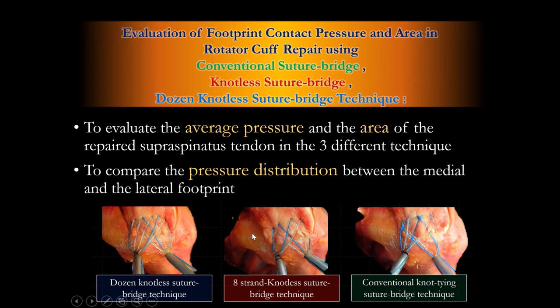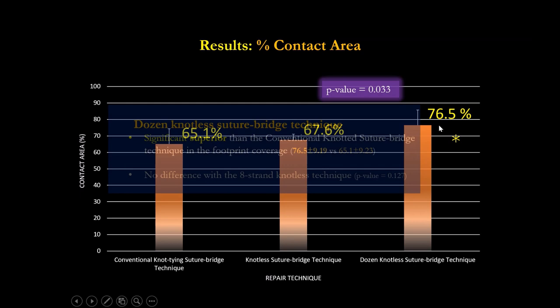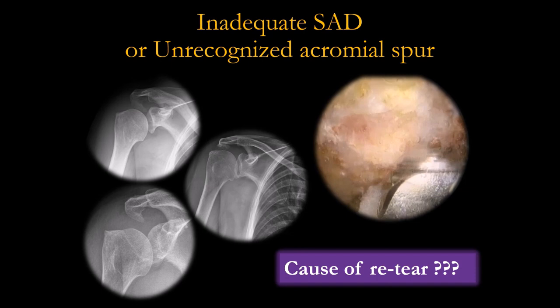Comparing conventional knot-tying to our knotless suture bridge: the knot-tying group showed strangulation at the medial row, whereas our knotless suture bridge provided better pressure distribution, better contact area using 12 sutures, and less strangulation at the medial row — which is better for healing.